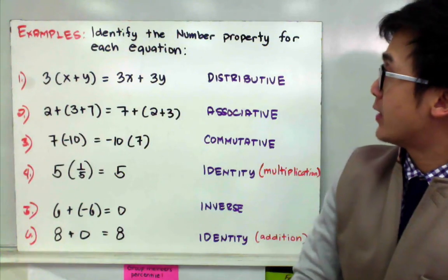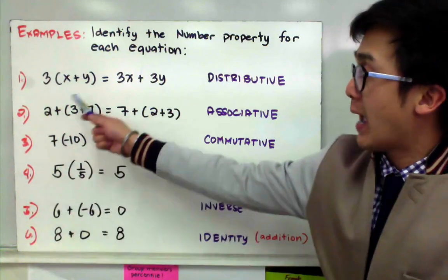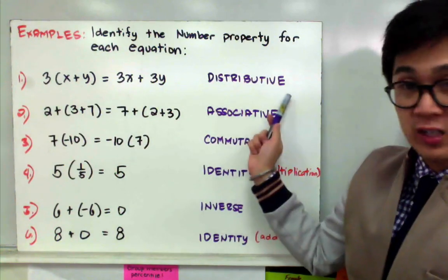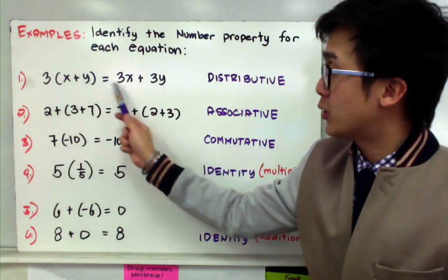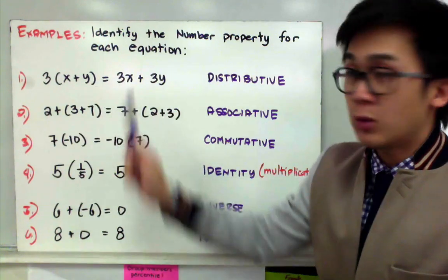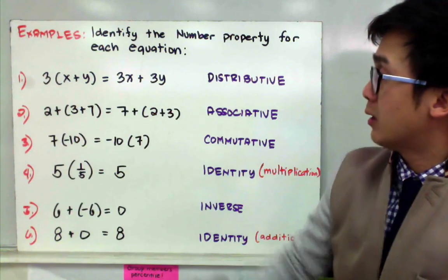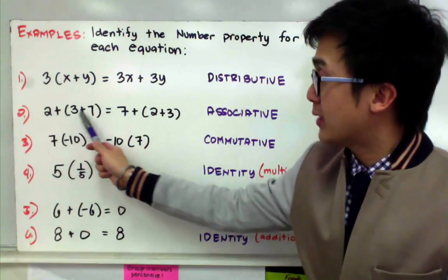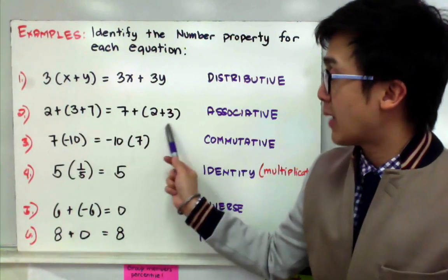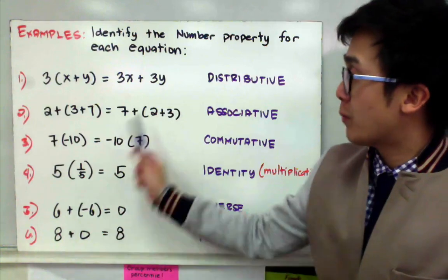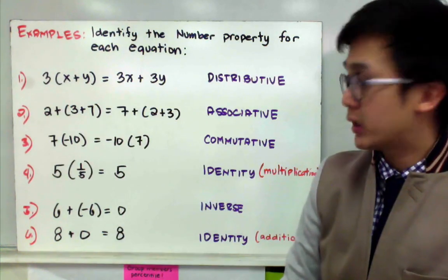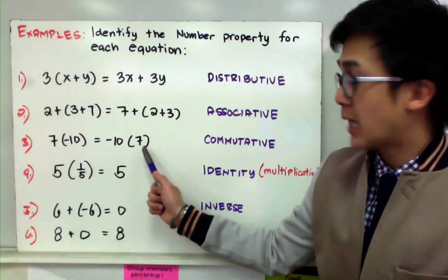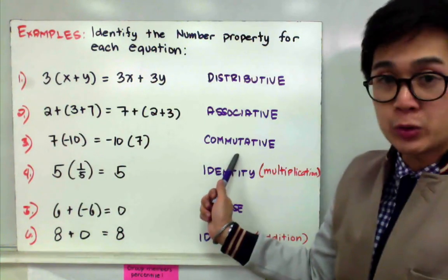Now in this given example, let's identify the number property for each equation. For number one, the property being displayed is the distributive property — because if you multiply three by x and three by y, it will be three x plus three y. For number two, we have the associative property because adding three and seven first and then adding two gives the same result as adding two and three first and then adding seven. For number three, seven times negative ten is the same as negative ten times seven, so the property for number three is the commutative property.